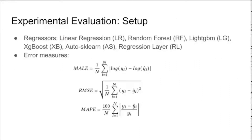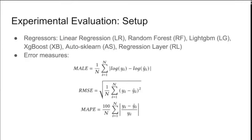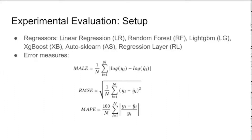We evaluated these feature sets across different regressors: linear regression, random forest, LightGBM, XGBoost, auto-sklearn, and the regression layer on top of our network. We used three error measures: MALE, RMSE, and MAPE.